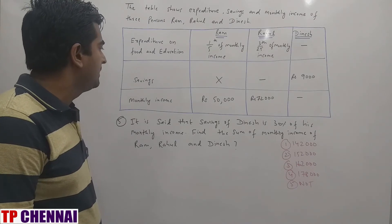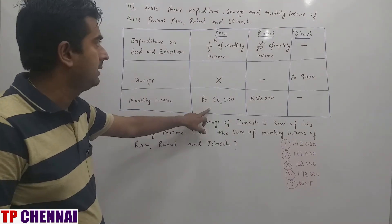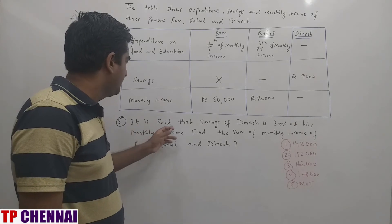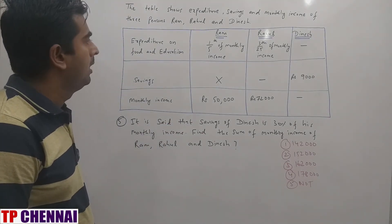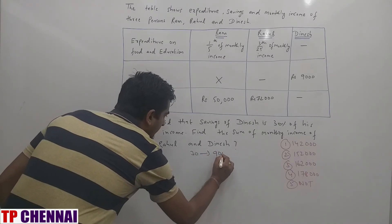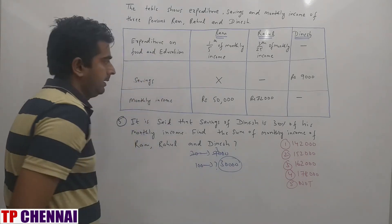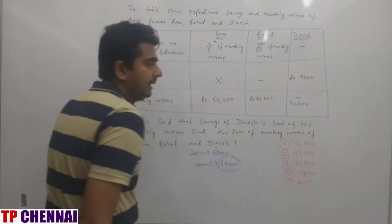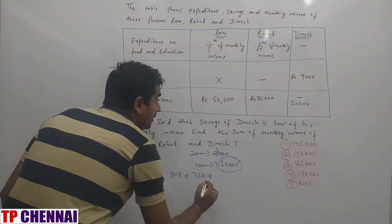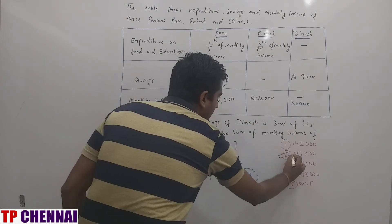Question 5: If savings of Dinesh is 30% of his monthly income, find the sum of monthly income of Rahul and Dinesh. Rahul's monthly income is 72,000. Dinesh's savings is 9,000 = 30%, so Dinesh's monthly income = 30,000. Therefore, sum = 72,000 + 30,000 = 102,000... wait, adding: 72K + 30K = 102K. The answer is the second option.